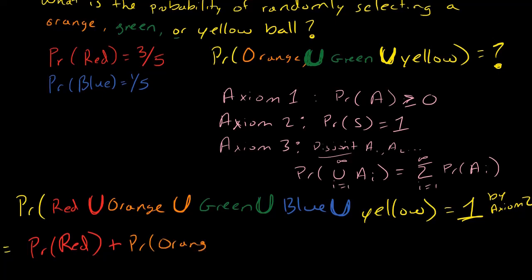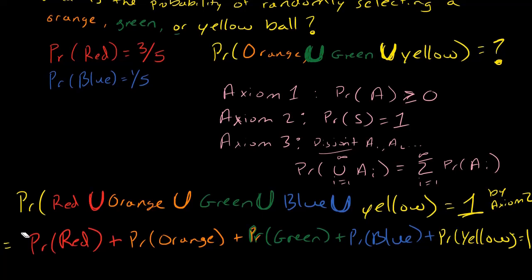The probability of orange plus the probability of green plus the probability of blue plus the probability of yellow. This is equal to 1 by axiom 2.